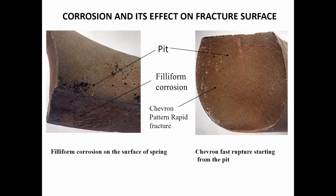Some fractures are highly influenced by corrosion. Normally springs fail because of fatigue fracture, but here a spring has failed due to a brittle chevron fracture. On the surface of the spring you can see many pits — this type of corrosion is called filiform corrosion. There is one pit of very large size, and from that pit a fast chevron fracture can be seen emanating.